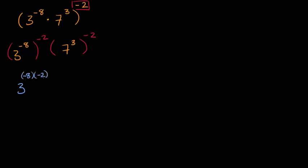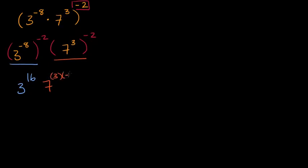Well, negative eight times negative two is positive 16. So this is going to be three to the sixteenth power right over there. And then this part, seven to the third to the negative two, that's going to be seven to the three times negative two, which is seven to the negative sixth power.